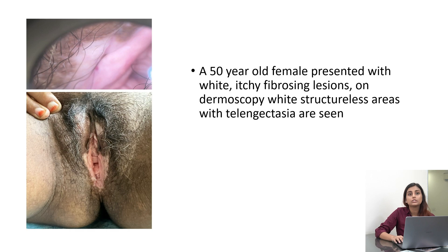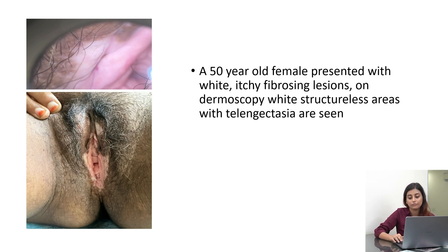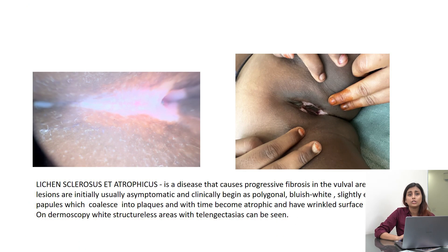Another patient — this was a female presenting with a fibrosing lesion — but on dermoscopy we see structure-less areas along with telangiectasia. You can see there is one dotted vessel and one vascular structure; because of a fold we are not able to fully appreciate it. So it is not diffusely white — not a clear white lesion — but we have a background of erythema, indicating lichen sclerosis et atrophicus.